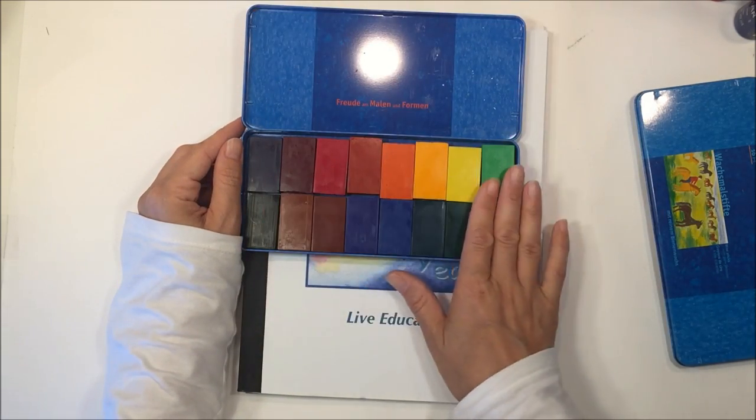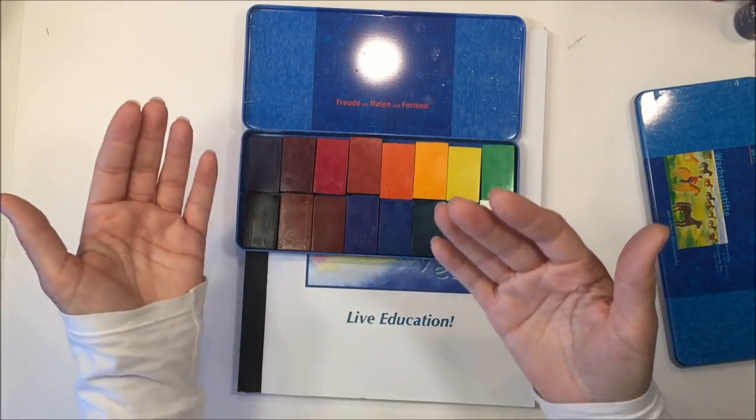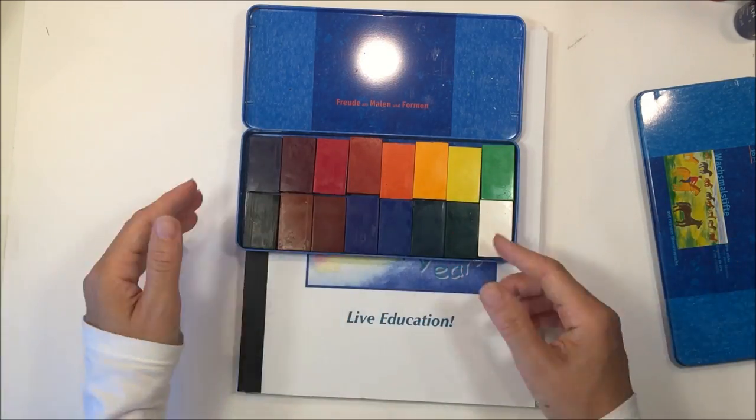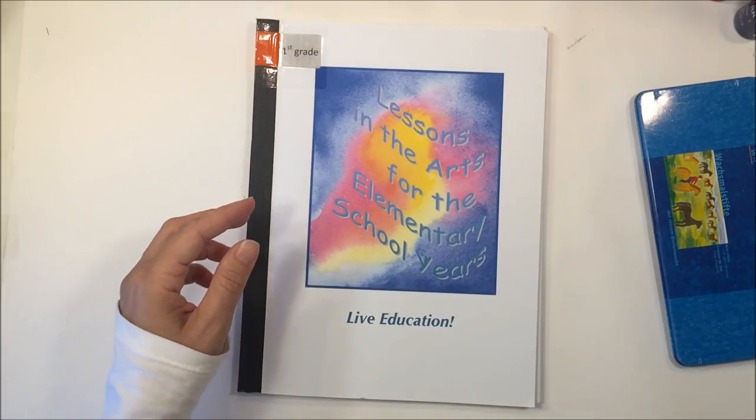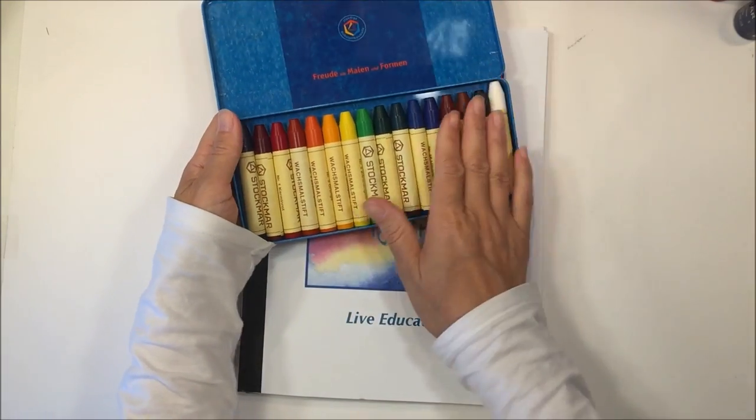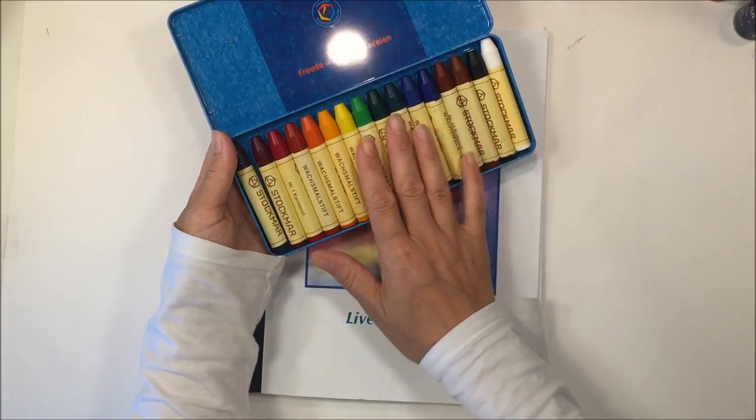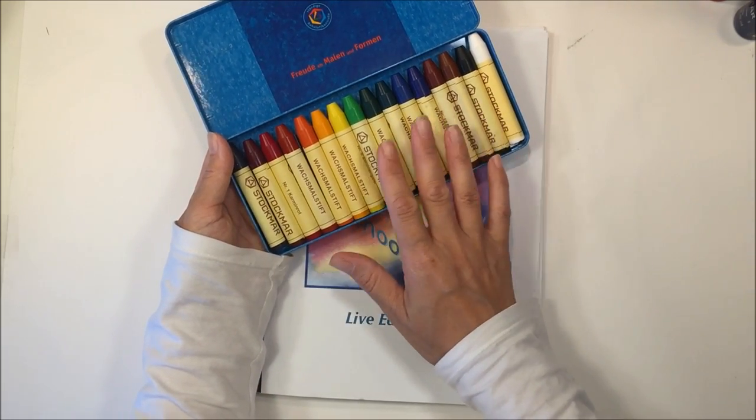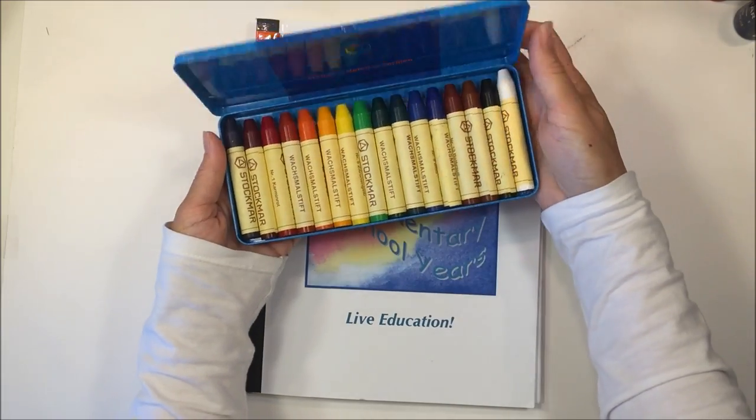This is great for kindergarten and first grade and second grade. And as the child moves through the grades, then you introduce more of the colors. It's not that you're introducing them because they've already figured that out by blending the colors, but then you can give them some of the other crayons. After they've used the block crayons, they can use the stick crayons. These are especially helpful when you're drawing like the larger letters.